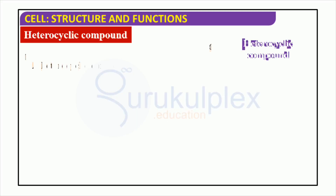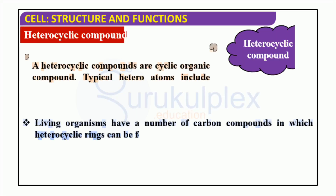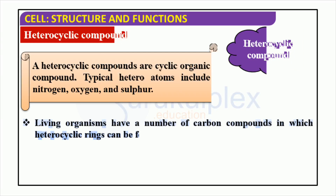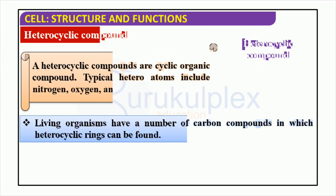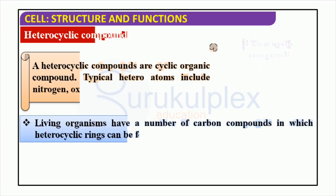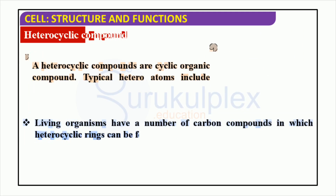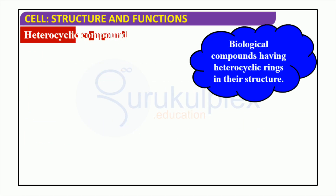Heterocyclic rings are composed of atoms that are not the same, such as nitrogen, oxygen, and sulfur. These rings are the backbone of the compounds found in all living organisms and form the basis for many of the biological compounds found in nature. They are essential to living organisms and are used in a variety of applications including medicine, food, and industry.